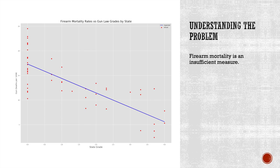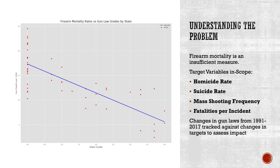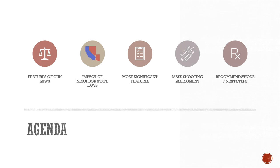Based on this, we can conclude that the firearm mortality rate is an insufficient measure of gun law effectiveness. For this reason, we are going to use the overall homicide rate as our primary metric, with suicide rates and mass shootings as secondary metrics. We define homicide rates as deaths by assault, excluding incidents of legal intervention — in other words, homicide rates do not include incidents of self-defense. Rather than rely on an opaque grading scale, we leverage a database from Everytown Research that tracks changes in state gun laws since 1991.